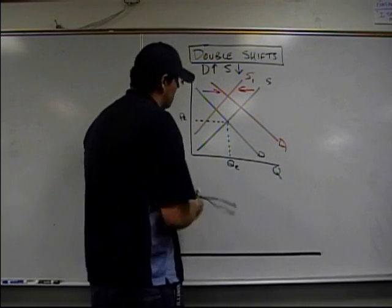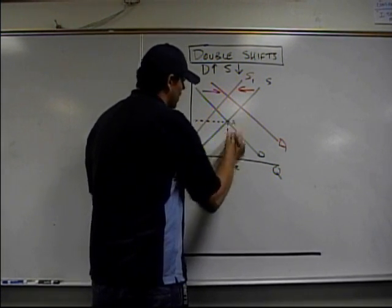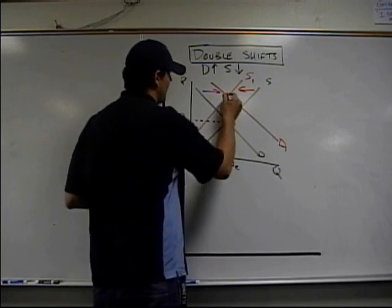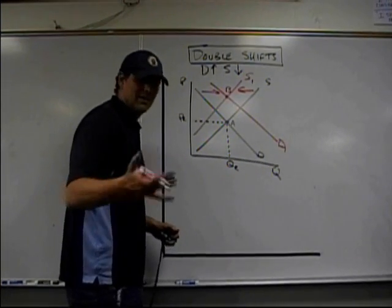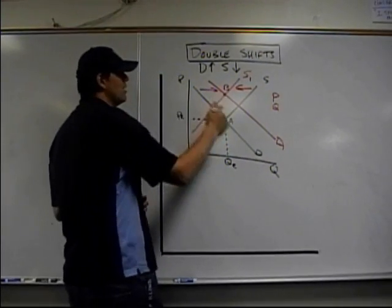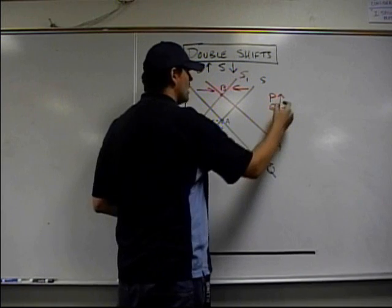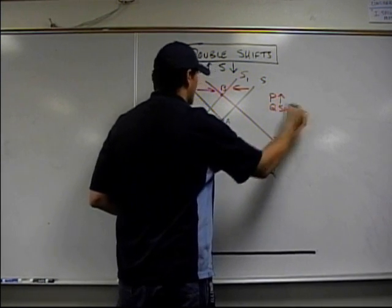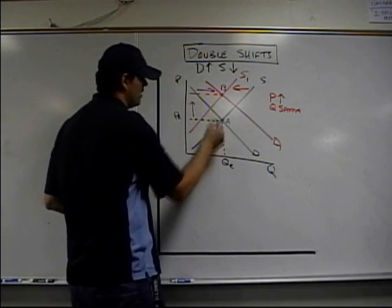We started right here at point A. We ended at point B right here. The goal of economic analysis is to identify what happened to price and quantity. Well, price obviously went up and quantity looks like it stayed the same. Price went up, quantity stayed the same.